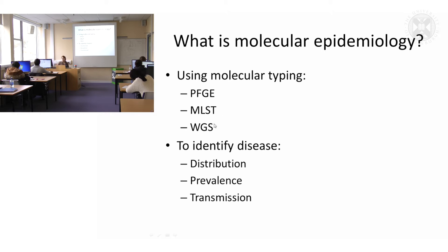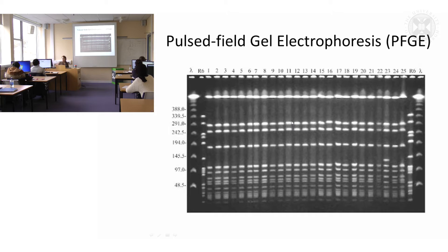There are a variety of different ways that you can do molecular epidemiology: pulse field gel electrophoresis, multi-locus sequence typing, and whole genome sequencing. I'm going to elaborate on these — they're basically different levels of resolution. I'm not really a lab person, and to me this looks quite scary.